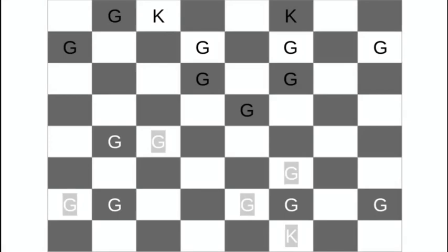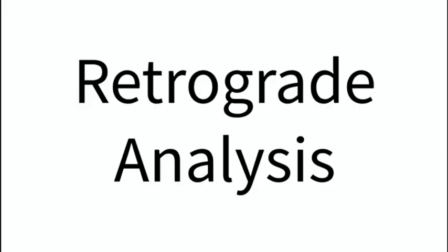The key here is that the guards can only move on one color. This is an example of retrograde analysis, a type of chess logic that involves looking into the past for answers.